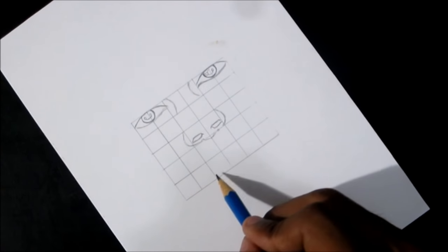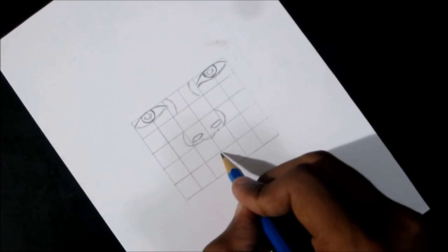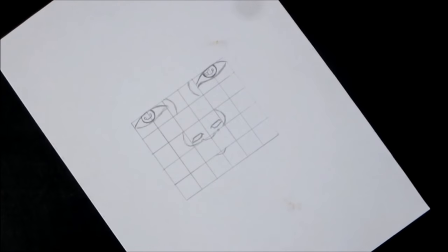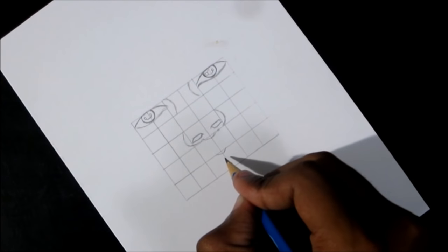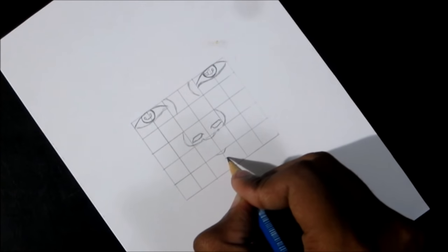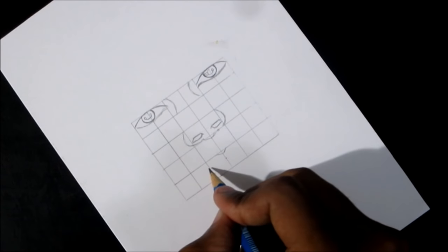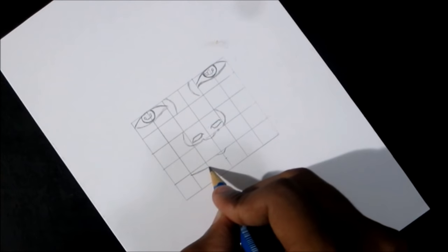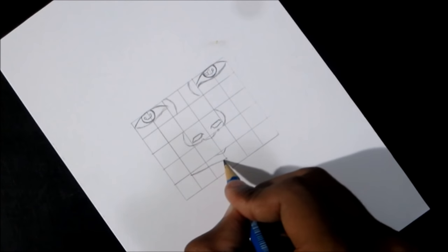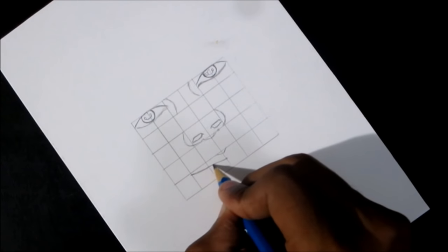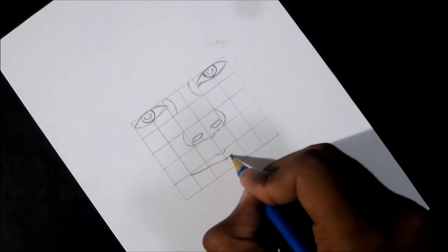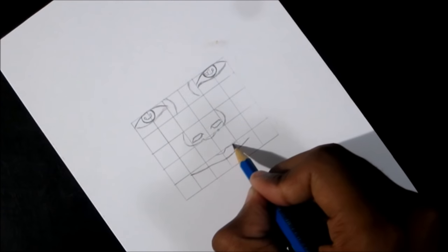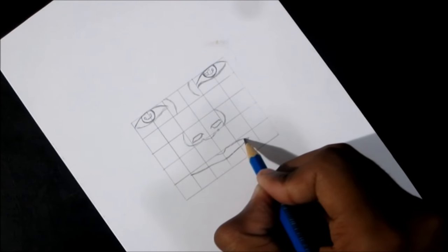Now take the last row for the lips, and again the central line will divide the lips into two halves. Do not draw the grid lines very dark like I have drawn here. This is just to teach you. Use a very light pencil for drawing the grid lines so that later you would be able to erase them easily.